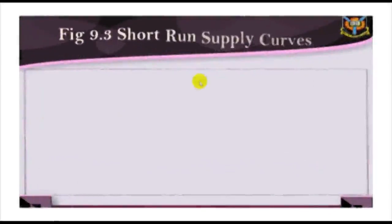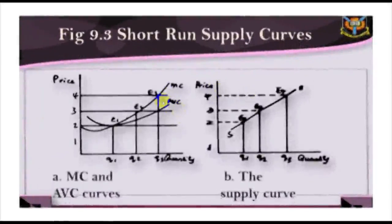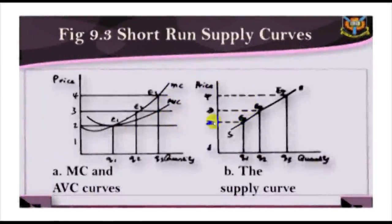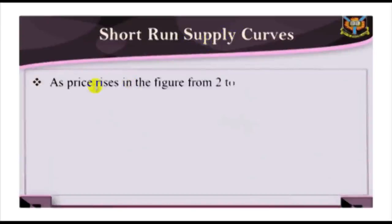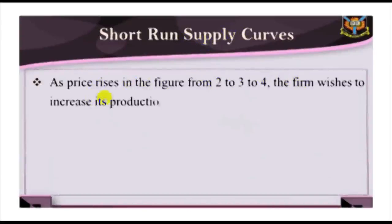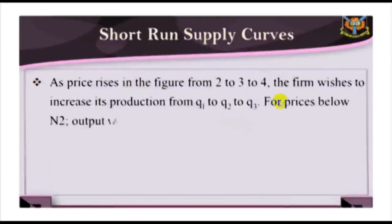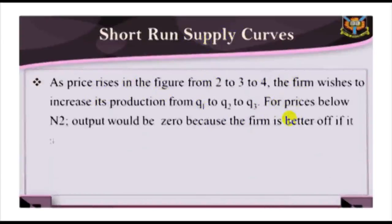For prices below average variable cost, the firm will supply zero. For prices above average variable cost, the firm will equate price and marginal cost. As price rises from two to three to four, the firm wishes to increase its production from Q1 to Q2 to Q3.